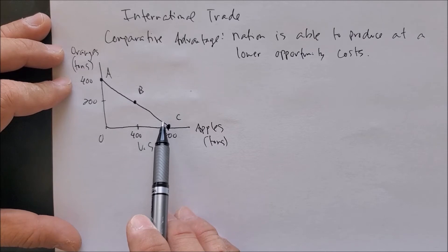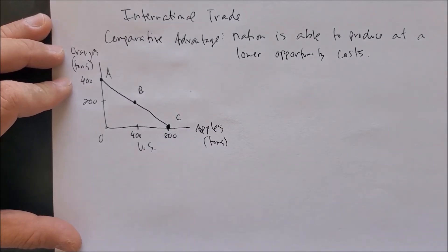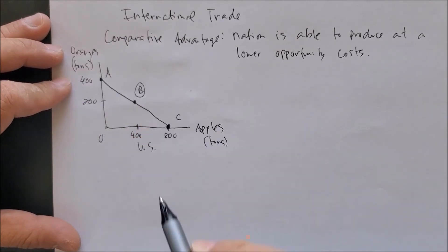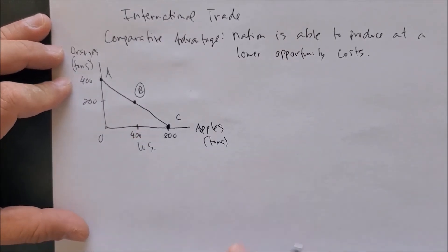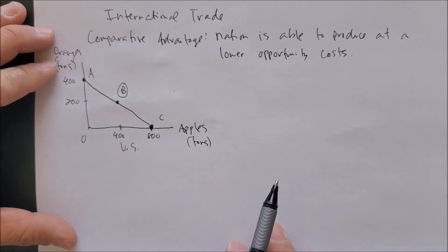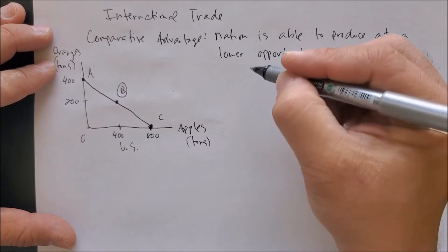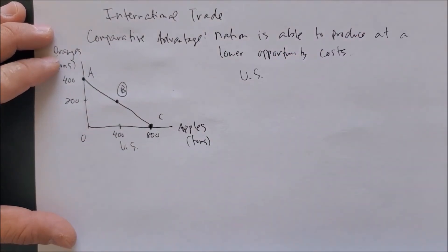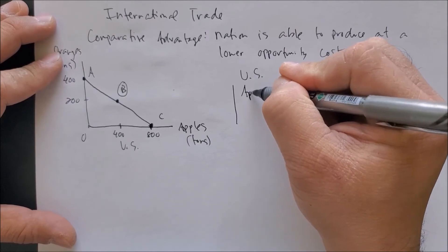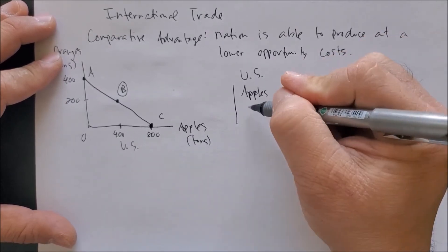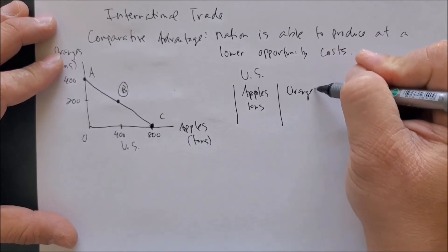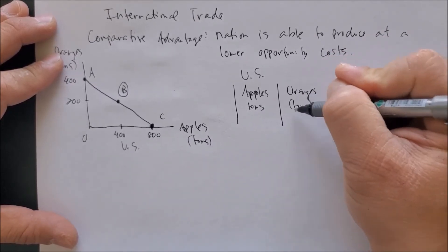Based on the resources the U.S. has, chances are it's going to produce at point B — a combination of apples and oranges. We can now use this information and put it on a chart: United States, apples measured in tons, oranges also measured in tons.